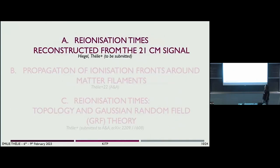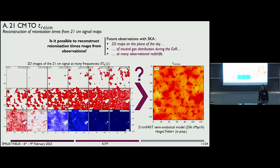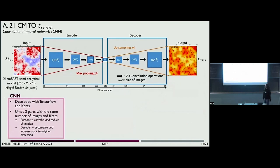This map is a simulated map — so can we reconstruct it from observations? That's what we try to do. We try to depart from a 21-centimeter map at one particular redshift and reconstruct this reionization times map. We do it with a convolutional neural network, with another PhD student at the Strasbourg Observatory. As an input of this network, we put one map at one specific redshift — for example at redshift 11 — one map of the 21-centimeter signal, and we reconstruct as an output the reionization times map.